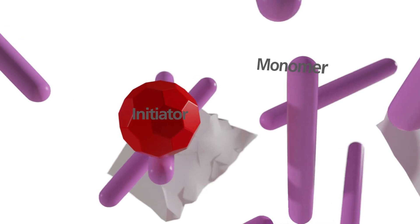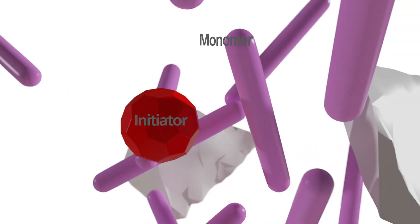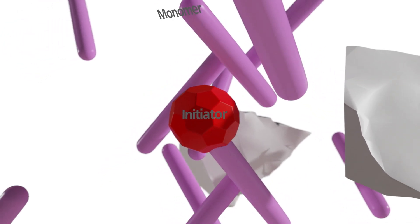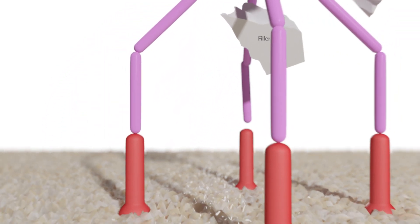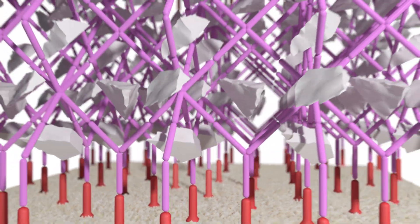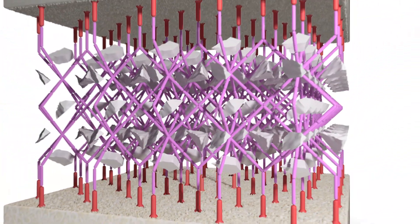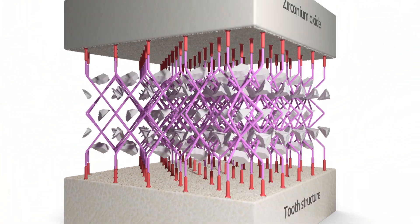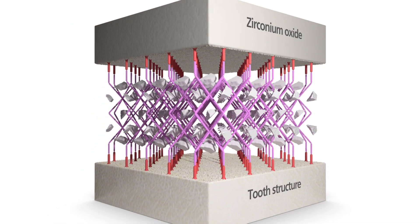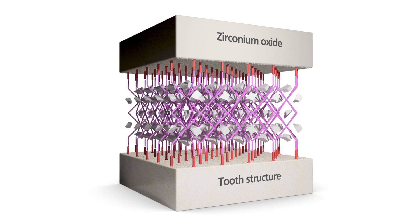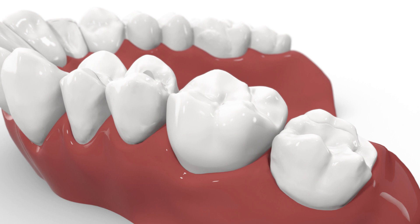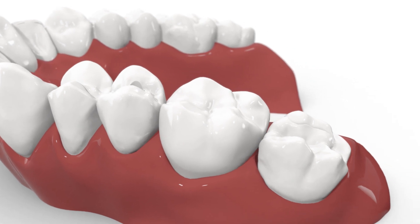The cement is polymerized using the self-curing or dual-curing mode. With the activation of the initiators, the monomers are combined to form a stable network upon polymerization. In this process, the MDP adhesive monomers on the restoration and tooth surface, as well as the filler particles, are integrated into the network. The filler particles provide high stability and particularly high radiopacity of the cement. The polymerization can be accelerated with a curing light.